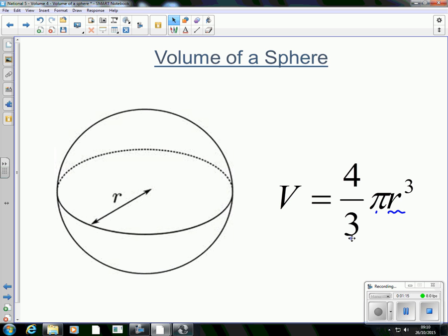Because you've worked with pi r squared so often, sometimes you can go into auto drive, and you can do 4 thirds, and then you start writing pi r, and it just becomes pi r squared. It's not pi r squared, it's pi r cubed.